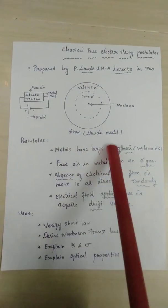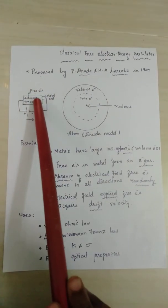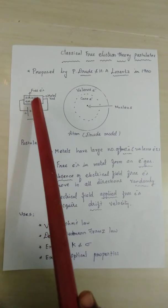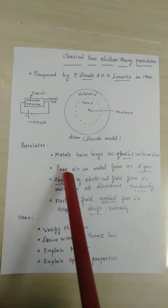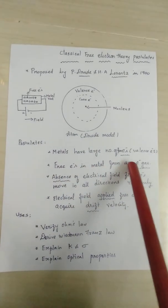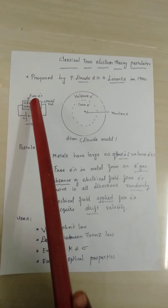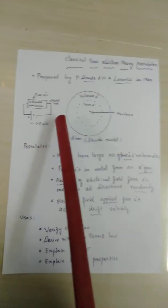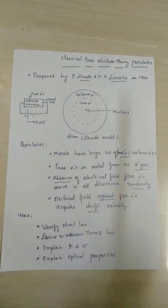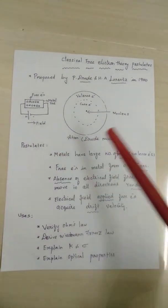Metals have large number of free electrons. See this rectangular metal has a large number of free electrons, that's why many arrow marks are there. Then the free electrons in metal form an electron gas. These free electrons form an electron gas, that means we have to assume that these electrons just act like gas molecules in a container.